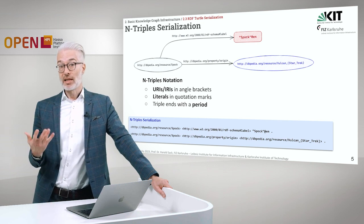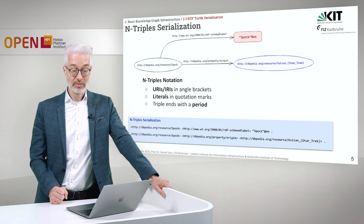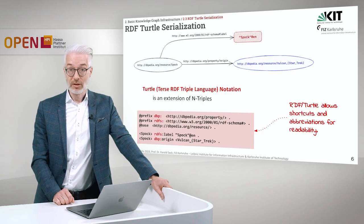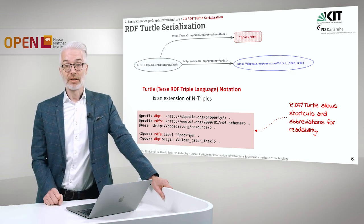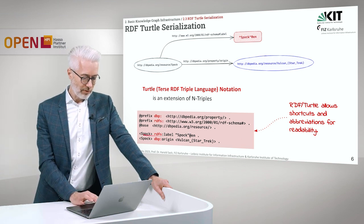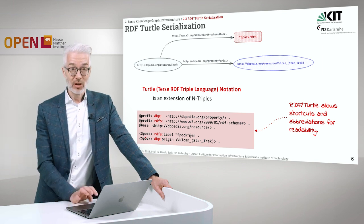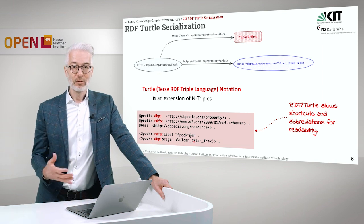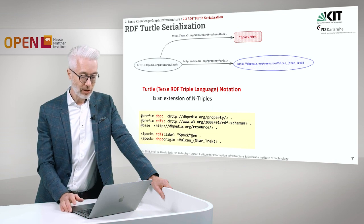Now, imagine we have a huge graph — it soon becomes quickly unreadable. So therefore there's another format called TURTLE, the Terse RDF Triple Language notation, which is an extension of RDF. As you see here, we have exactly the same graph description in TURTLE but it's much shorter. TURTLE allows shortcuts and abbreviations for the sake of readability.